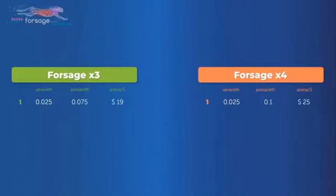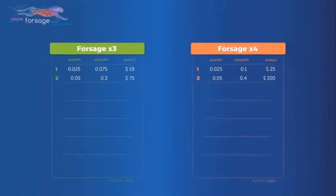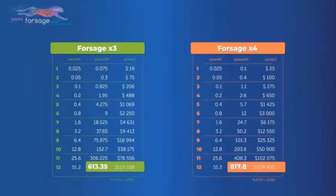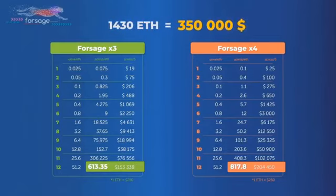If you continue opening up each week a new slot, you'll be able to generate as much as 613.35 Ethereum from Forsage X3 and 817 Ethereum from Forsage X4. That's 1,430 Ethereum. Now if Ethereum is $250, that is over $350,000. You get the idea.